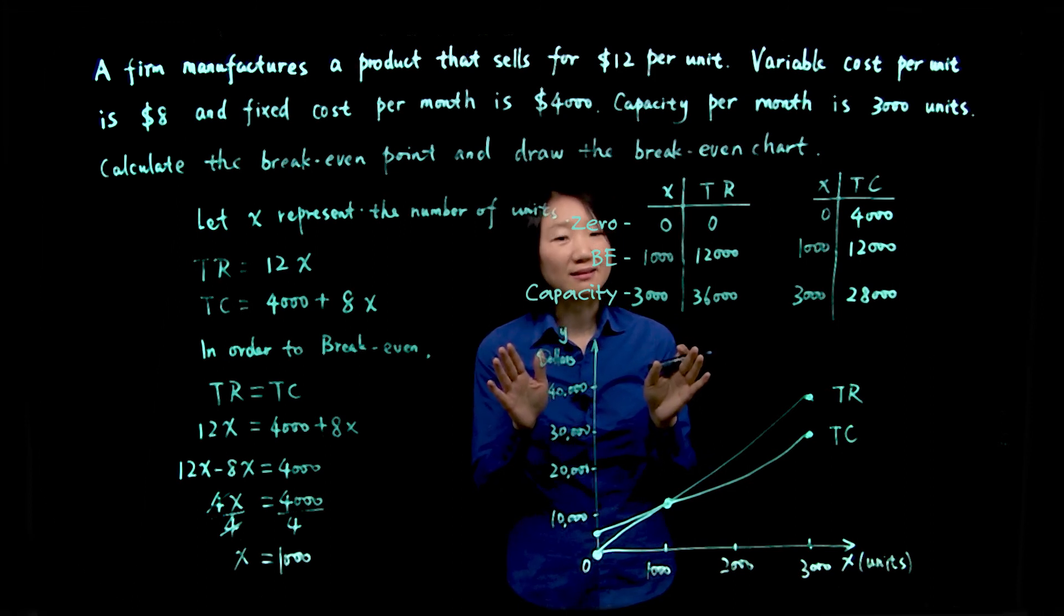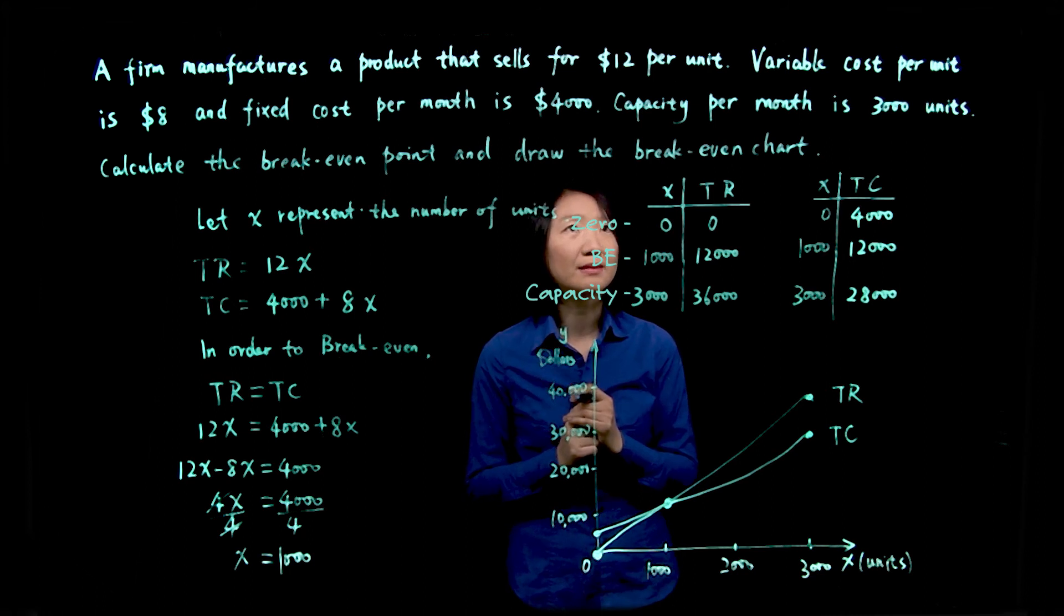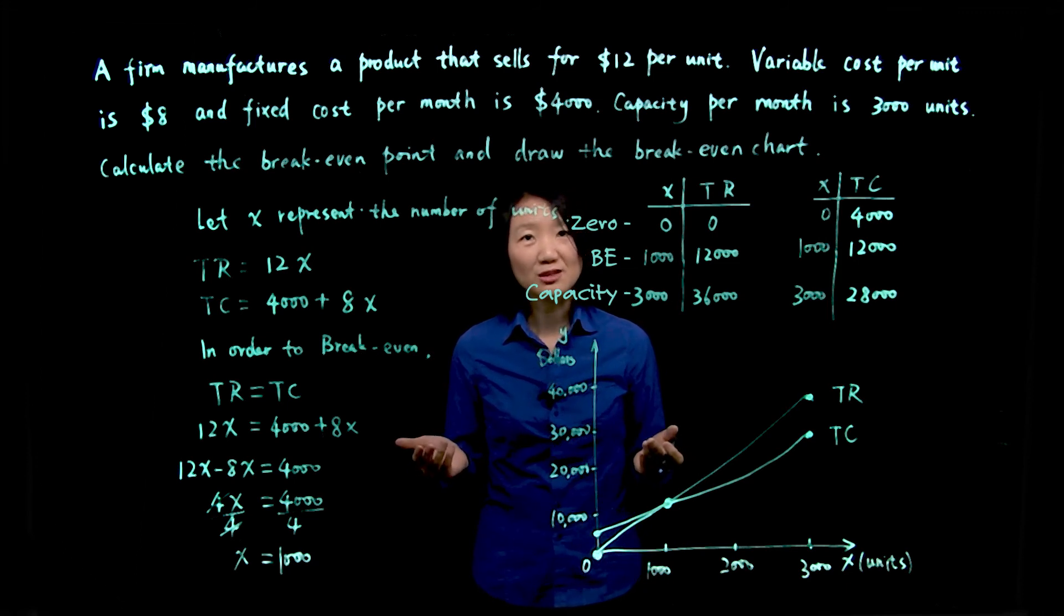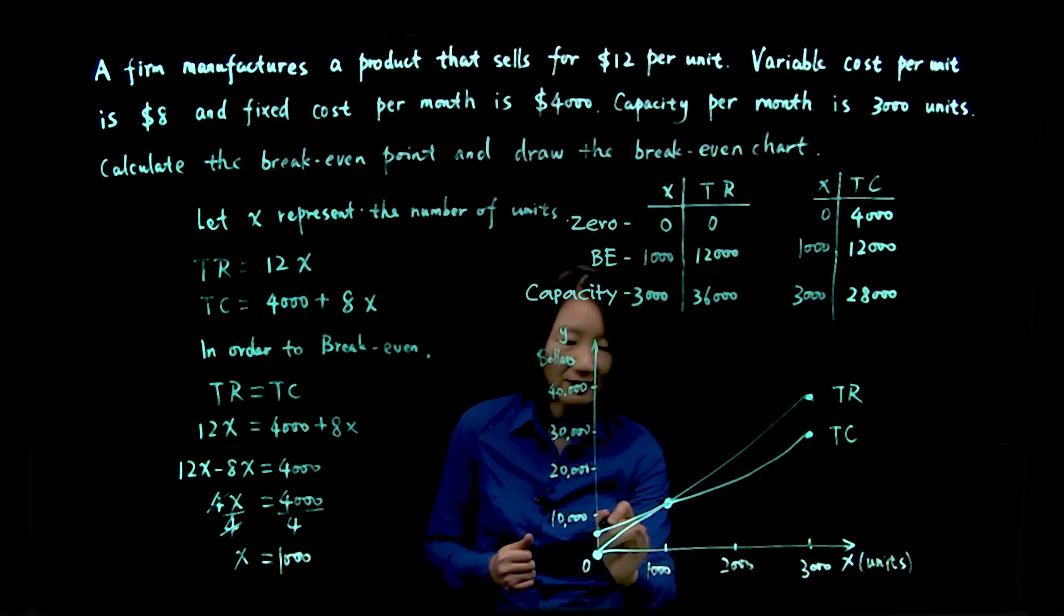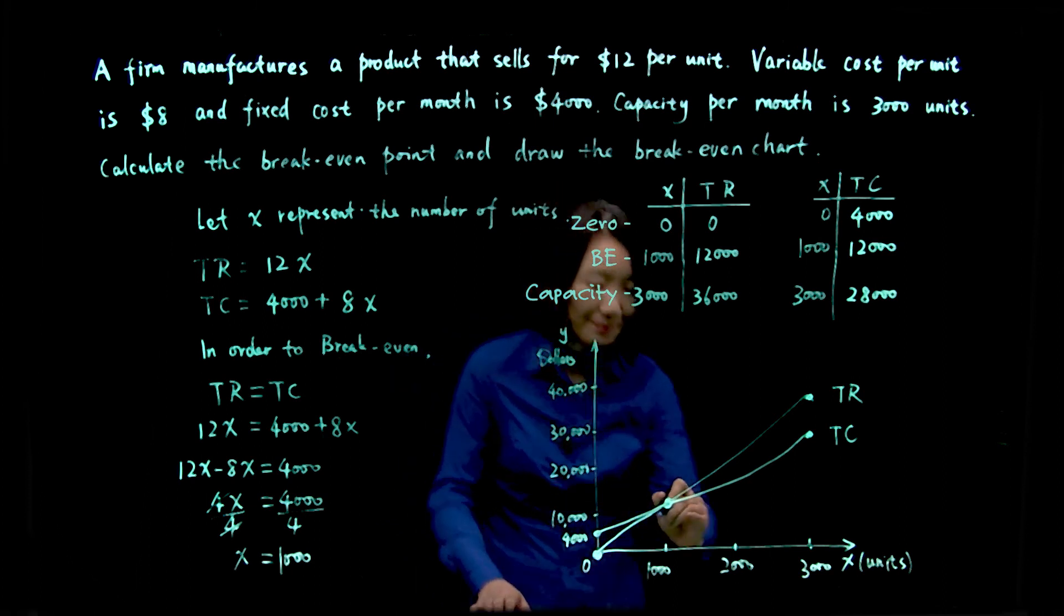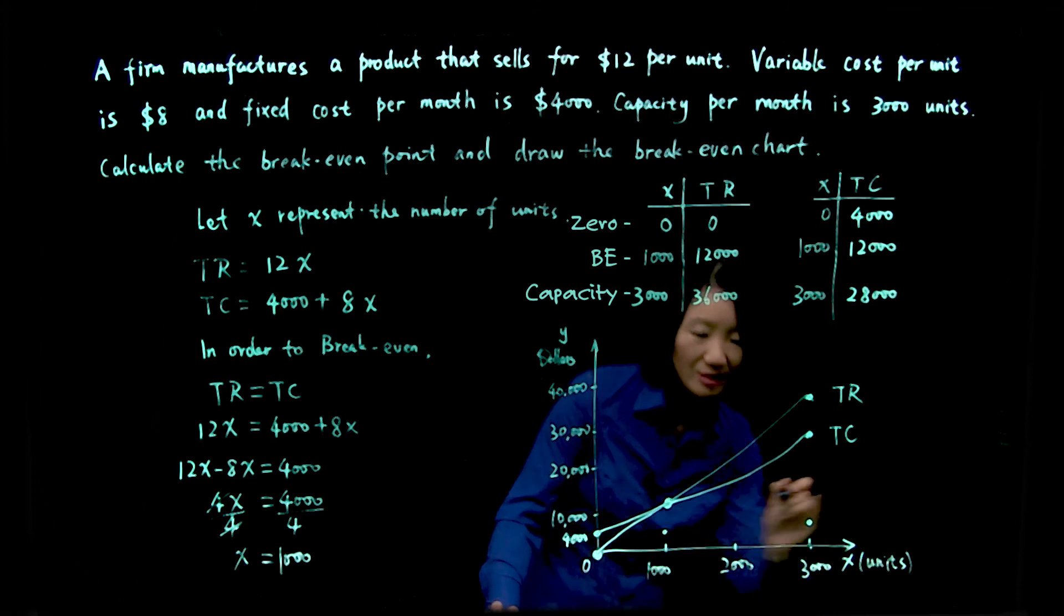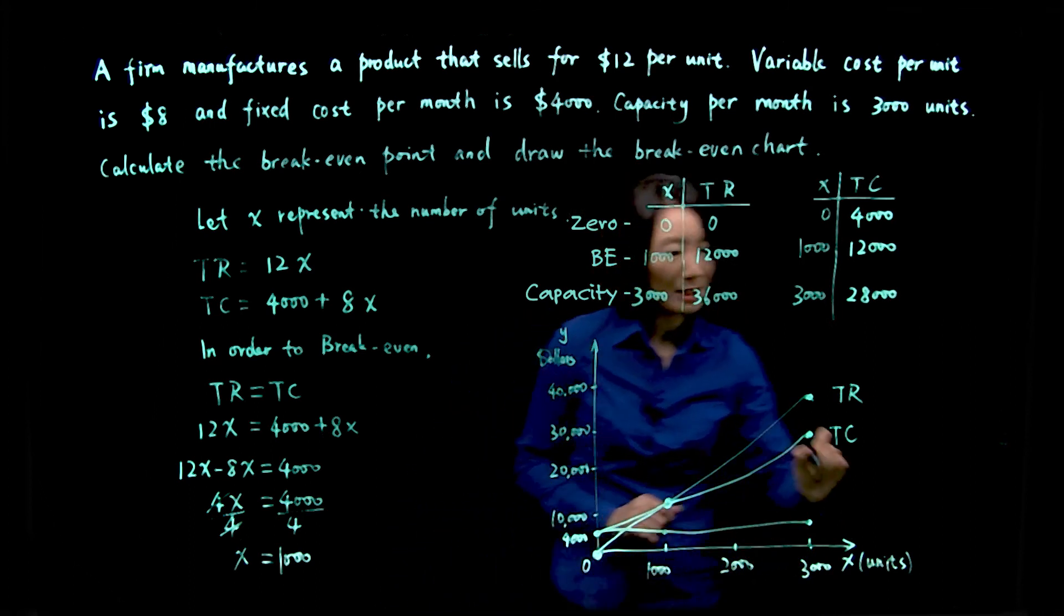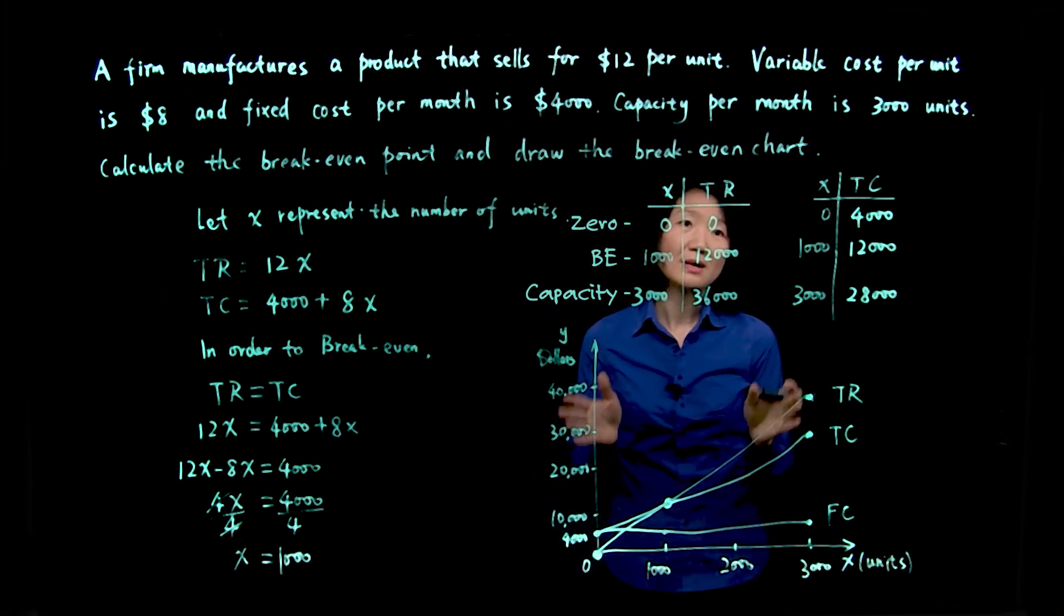Now we're almost done, but we still want to add one more line, which is the fixed cost line. Now think about fixed cost. Fixed cost means it doesn't matter how many units you produce, it stays the same. It's fixed. So $4,000 right here, it stays the same. It doesn't matter if you sell 1,000 units or 3,000 units. Okay, so that's fixed cost.